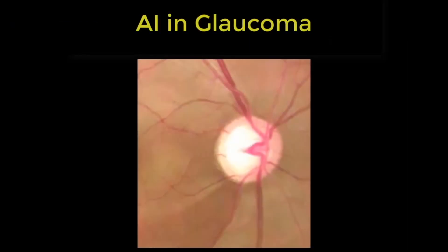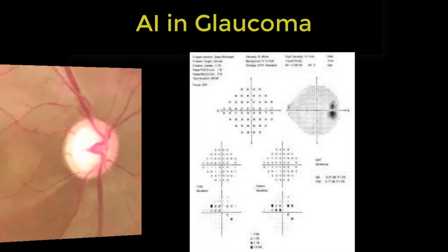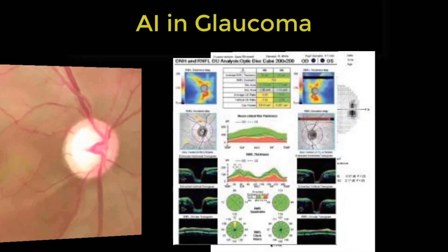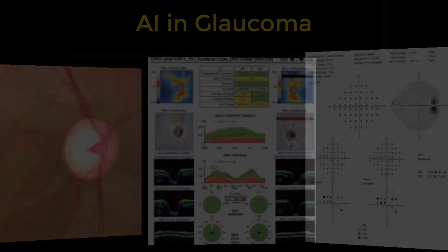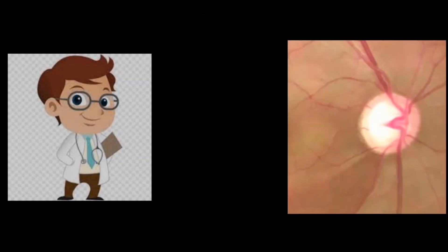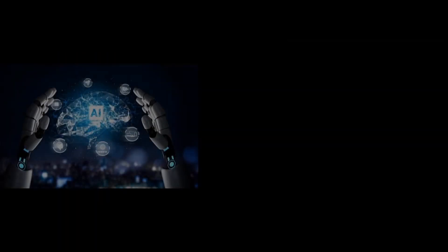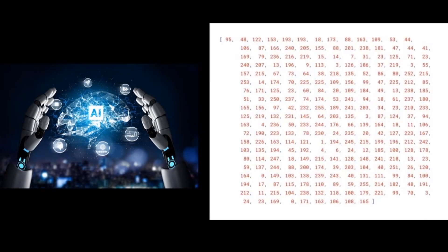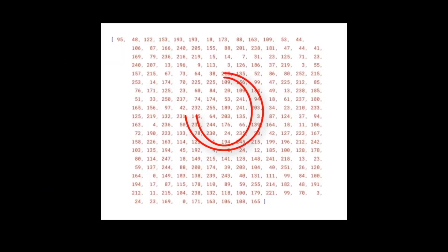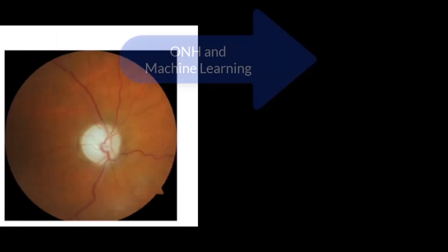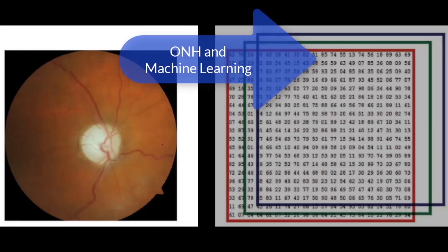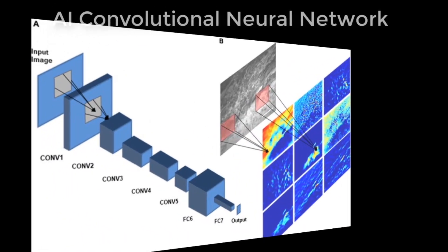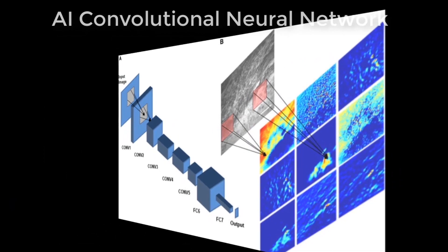AI does this by interpretation of fundus photos, visual fields, OCT, and structure-function correlation. Consider this picture — an ophthalmologist can look at it and immediately know that it is a glaucomatous disc. To the AI, the image appears as pixels in a 3D manner with length, breadth, and width, and it interprets these pixels to form an image. Optic nerve head abnormalities can be identified using AI through machine learning and convolutional neural network evaluation strategy, a type of deep learning.